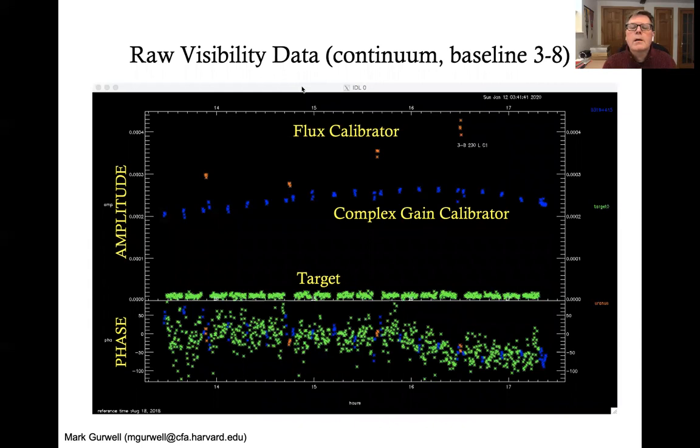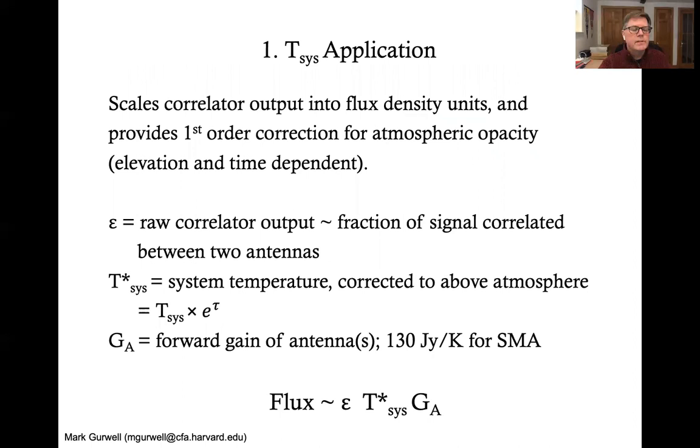So this is what the raw visibility data looks like in the continuum, which at the time was 8 gigahertz, but nowadays is 12 gigahertz for one sideband of one baseline of one receiver. There are lots of different sources listed. We have amplitude at the top and phase at the bottom. The green data sets are the target source. Then there are complex gain calibrators, which in this case in the blue is 3C84, which is listed according to its J2000 name, and then also a flux calibrator, Uranus, which is in the red. And in this particular case, the gain calibrator is also the passband calibrator because it's quite strong and we have lots of observations of it.